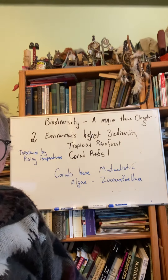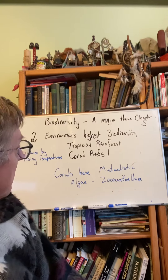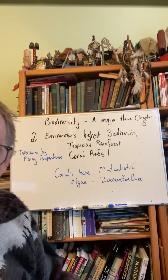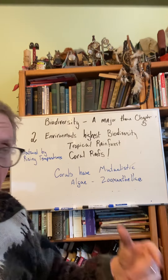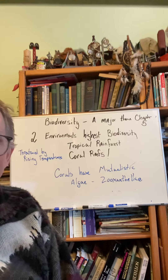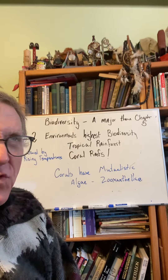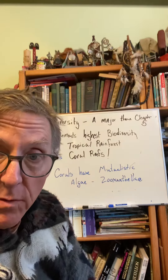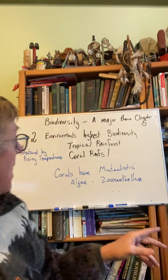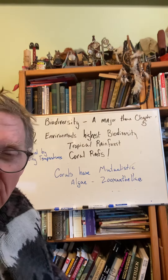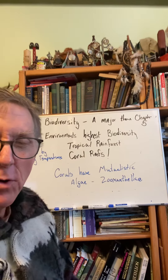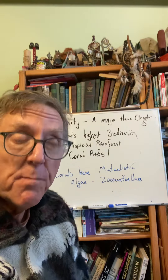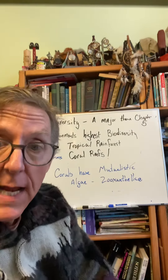One of the major themes of this chapter — it's in the title — is basically that this chapter is called Biomes and Biodiversity. One of the major themes, of course, is biodiversity: the number of different species in an area.